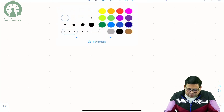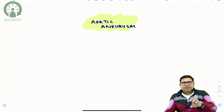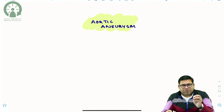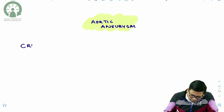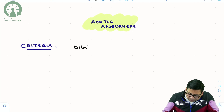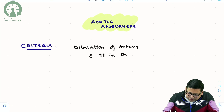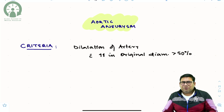The exams are around the corner and Aortic Aneurysms have been a very important topic — you get a lot of questions from it. Before we start, I will try to concise all these things in maybe 10-15 minutes. First, let me explain the criteria of Aneurysm: there should be a dilatation of an artery with increase in original diameter by more than 50%.